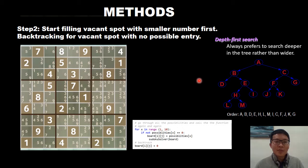Step two: start filling up all the vacant spots with smaller numbers first. We also backtrack for vacant spots with no possible entry. This is where depth-first search comes in. Depth-first search always prefers to search deeper in the tree. For this decision tree, the order will be A, B, D, E, H, L, M, and I. This is the depth-first search approach for the rest of the nodes.